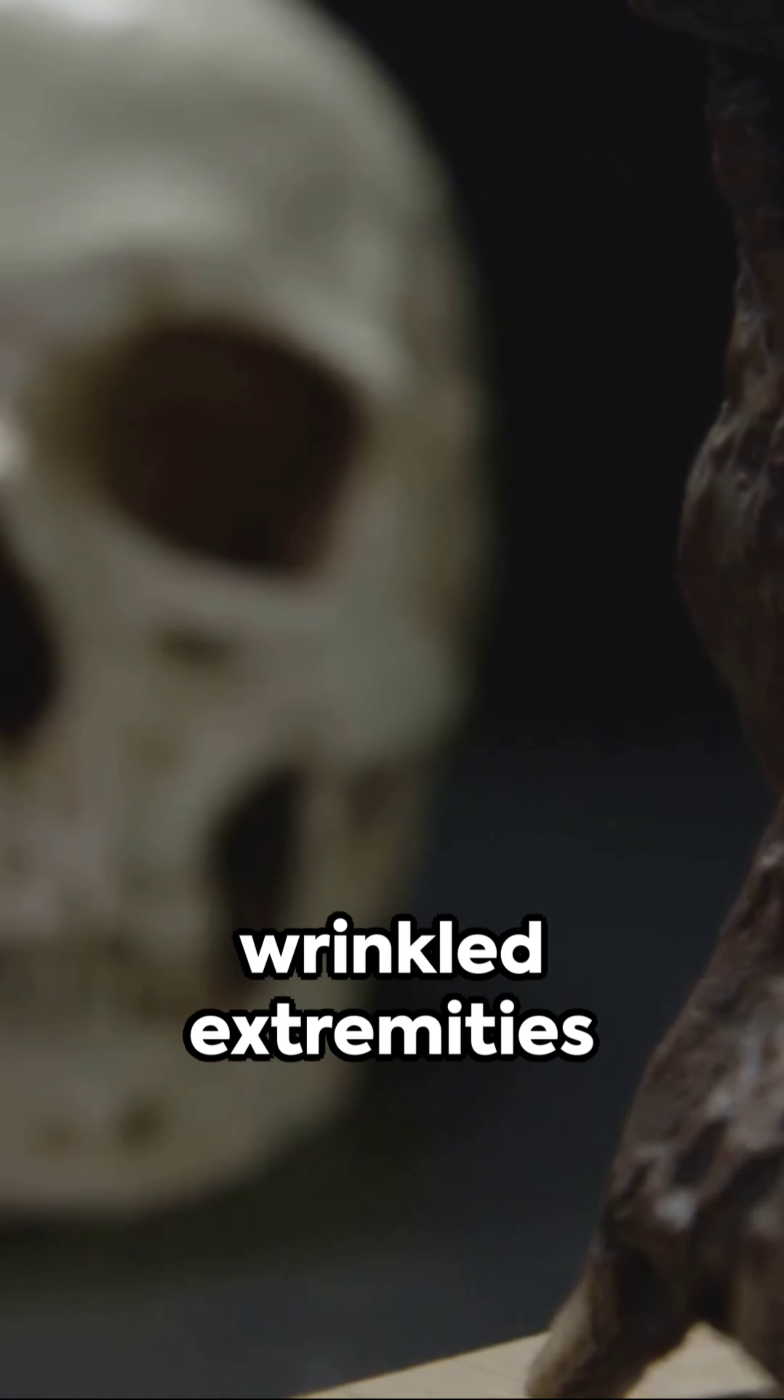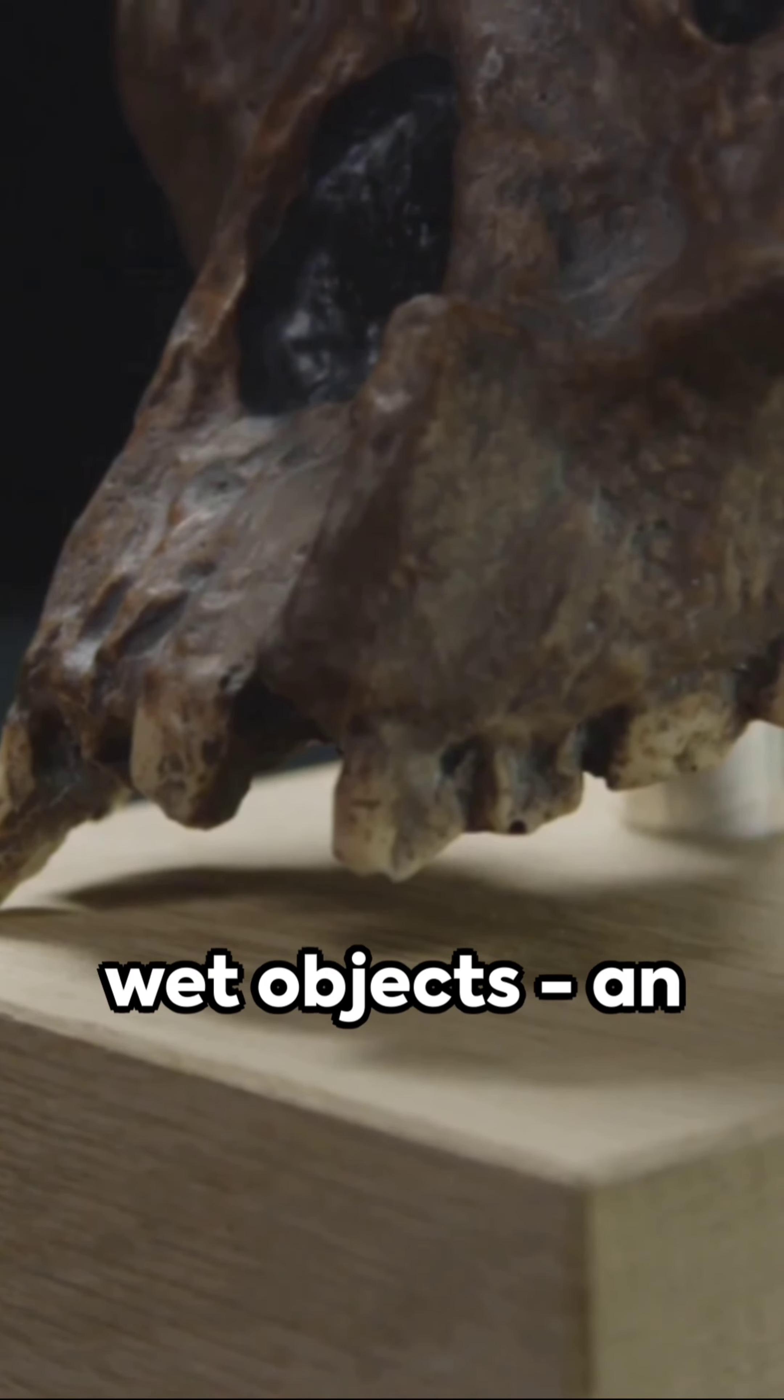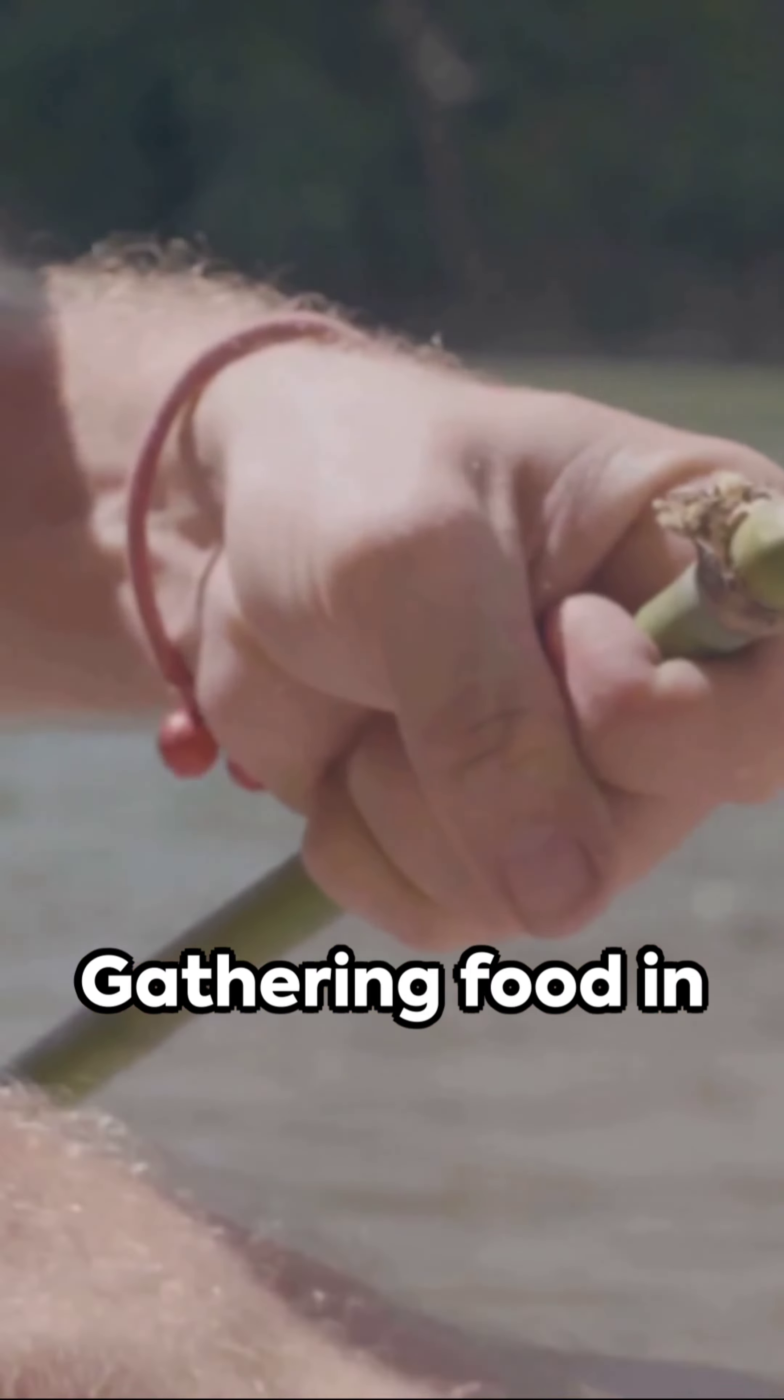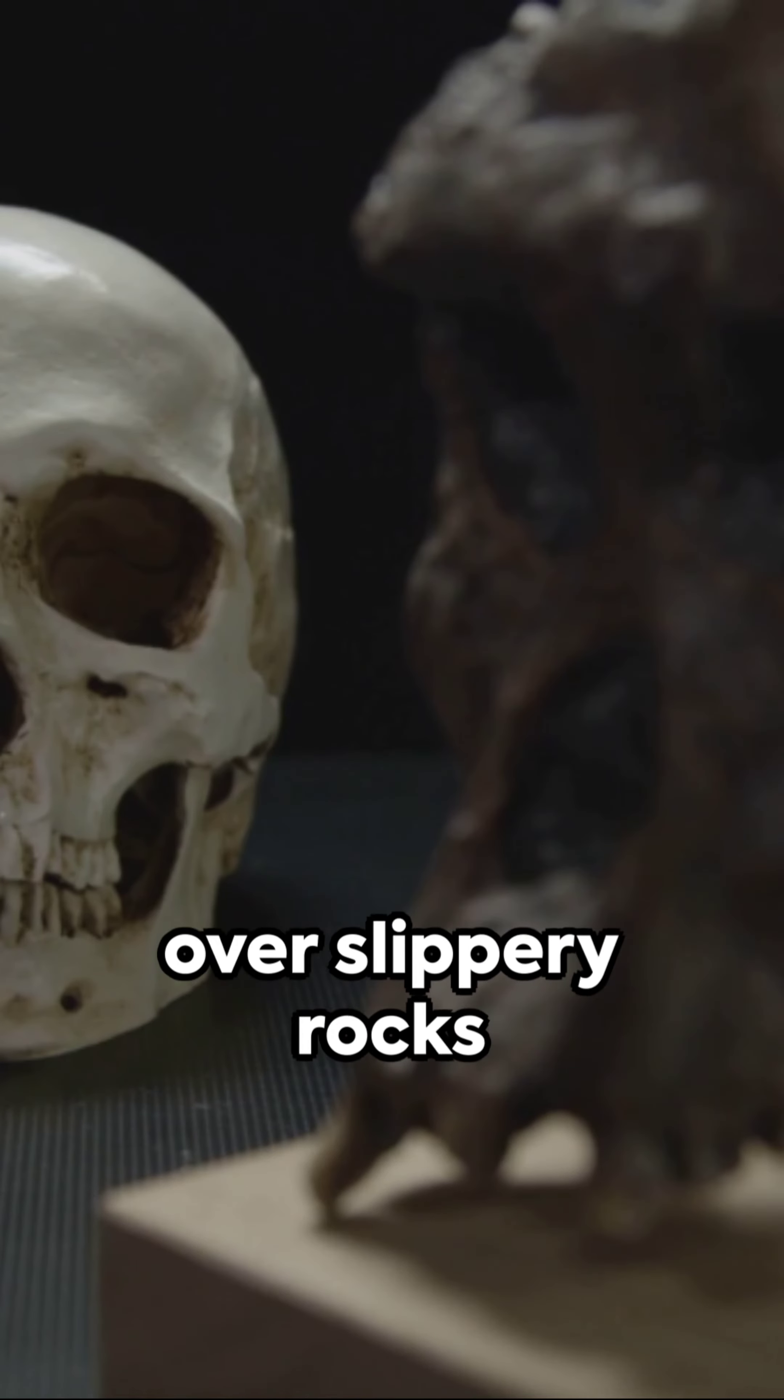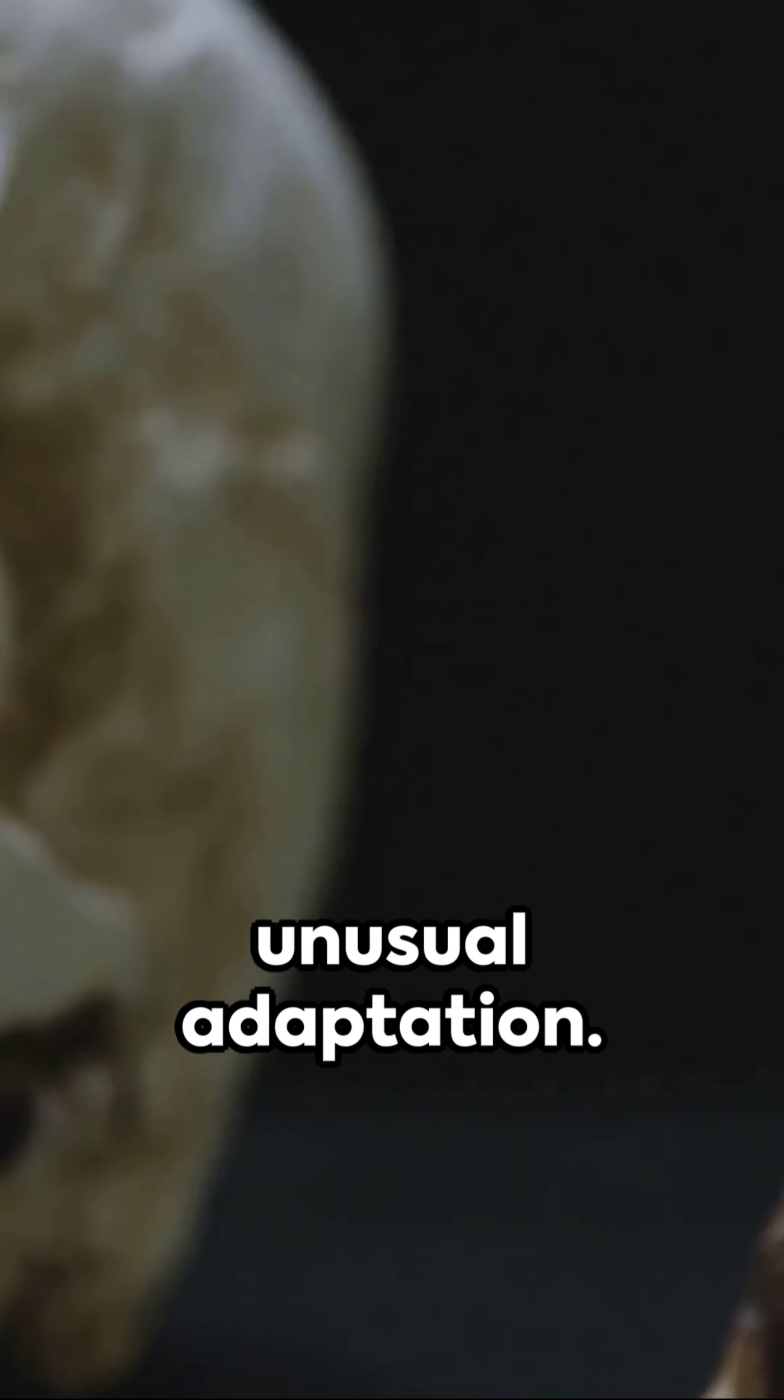Studies suggest that wrinkled extremities might aid in gripping wet objects, an evolutionary advantage for our ancestors. Gathering food in wet conditions or escaping predators over slippery rocks could have been made easier with this unusual adaptation.